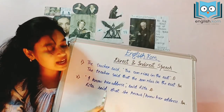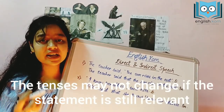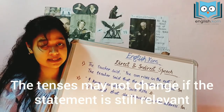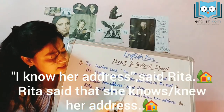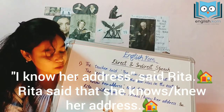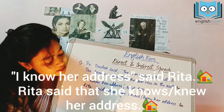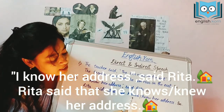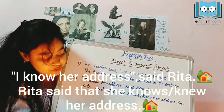If the statement is still relevant, we can choose to change or not change the tense. For example, 'I know her address,' said Rita. This is the direct form. In the indirect form, Rita said that she knows her address, or she knew her address — both are acceptable.